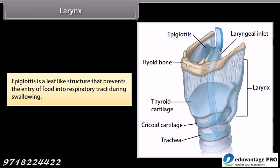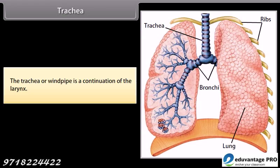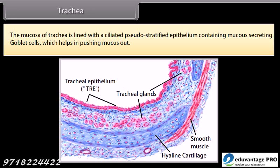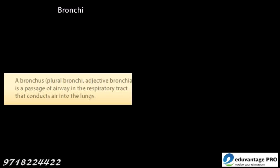The epiglottis is a leaf-like structure that prevents the entry of food into the respiratory tract during swallowing. The trachea or windpipe is a continuation of the larynx, supported by incomplete C-shaped rings of hyaline cartilages. The mucosa of the trachea is lined with ciliated pseudo-stratified epithelium containing mucus-secreting goblet cells, which help in pushing mucus out.